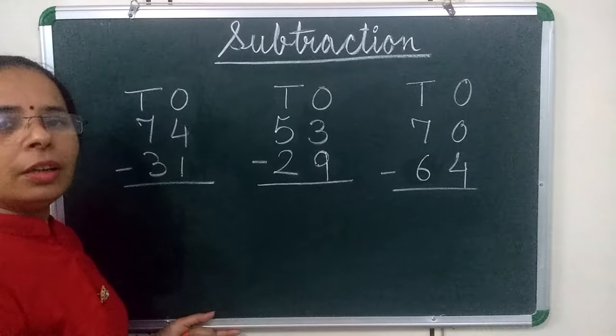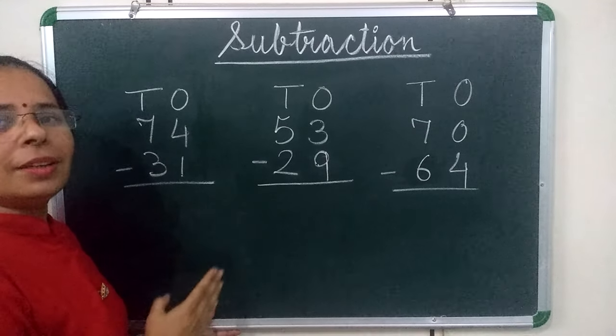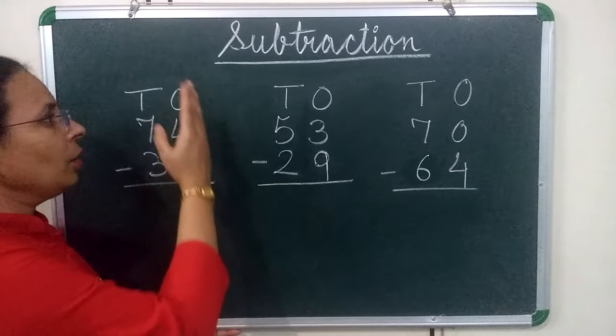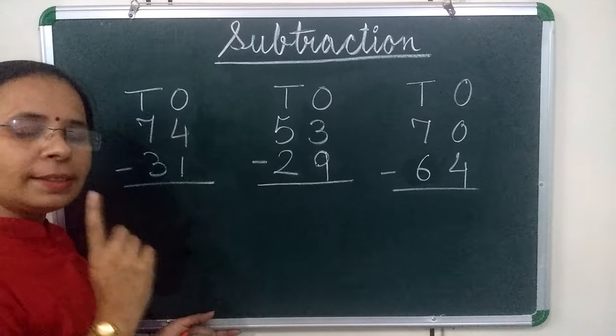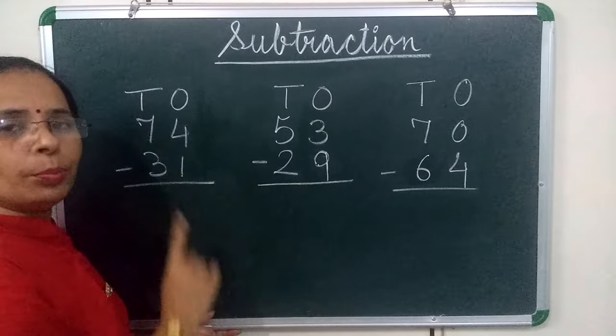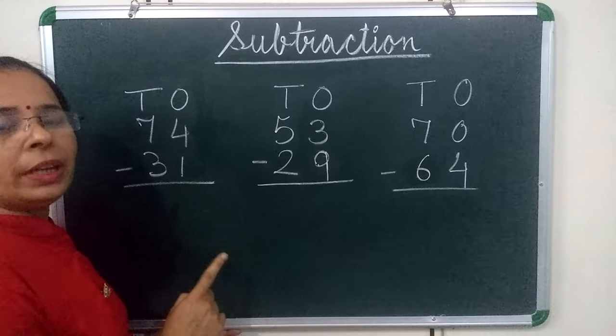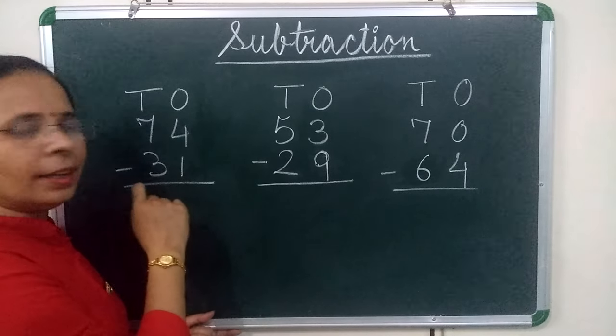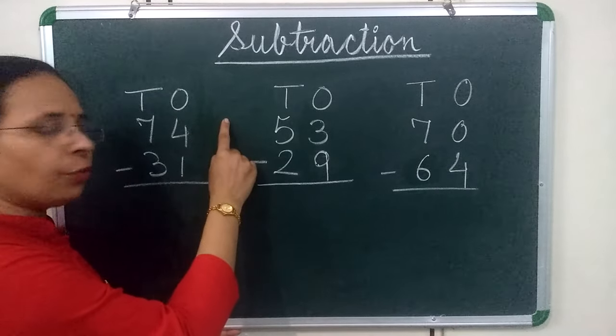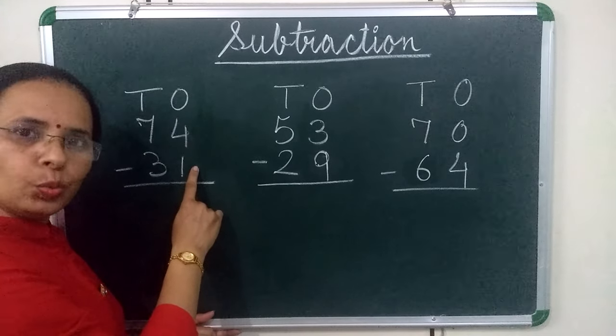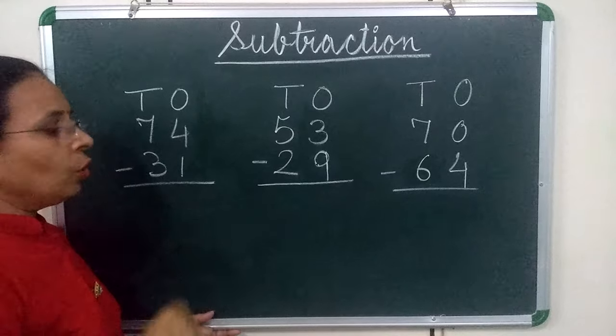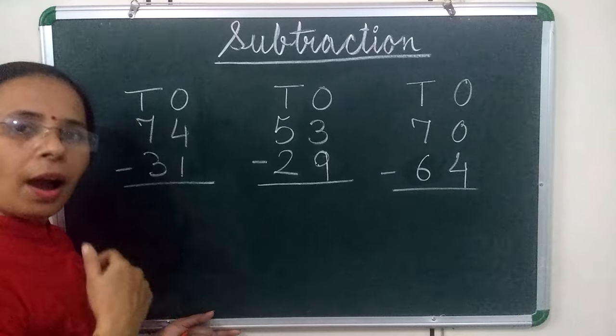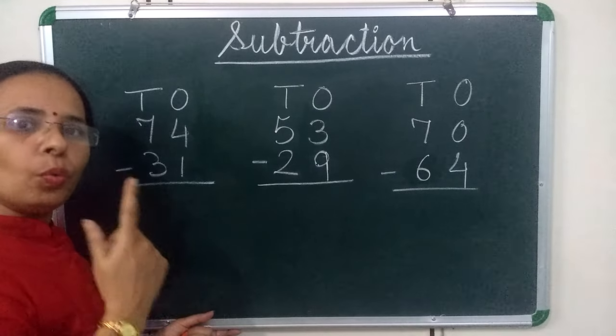Children, always remember we will start subtraction from one's place. One more thing you have to remember, in subtraction, first number should always be greater than second number. Here first number is 4 and second number is 1, so 4 is greater than 1. Children, we will start counting after 1 up till 4.